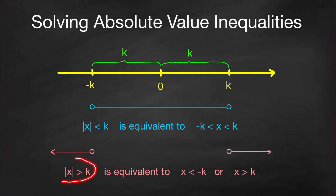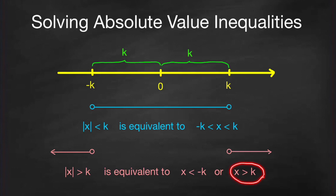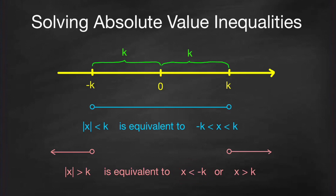For absolute value of x greater than k, this means the distance of x from 0 is greater than k. So x may lie on the ray where x is greater than k, or on the other side where x is less than negative k. For example, if k equals 5, then absolute value of x greater than 5 is equivalent to x greater than 5, or x less than negative 5. For instance, negative 6 is less than negative 5, and the absolute value of negative 6 is 6, which is greater than 5.